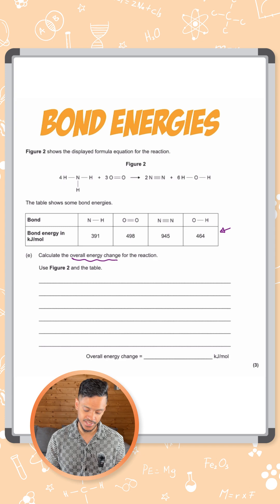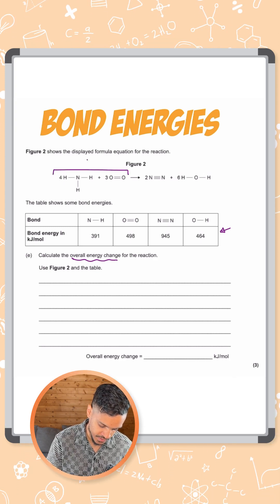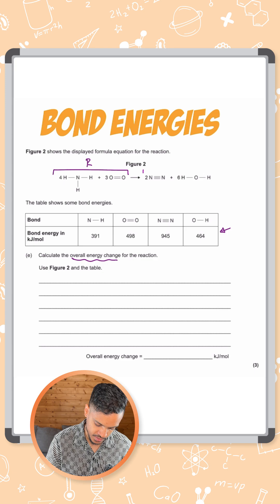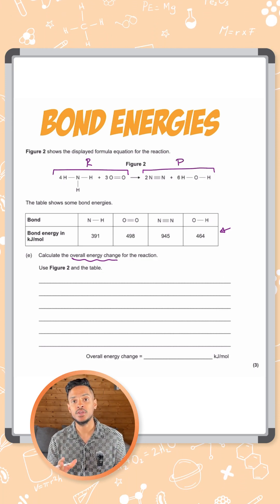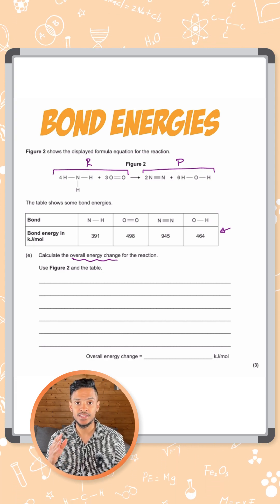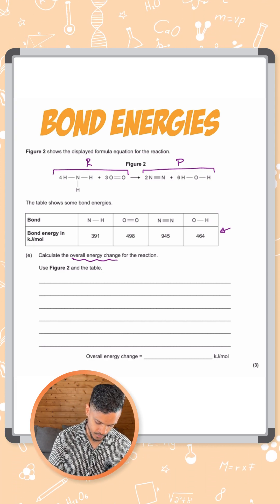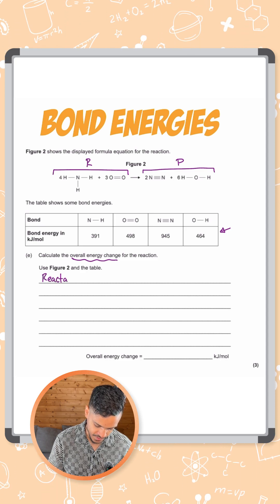Overall energy change is calculated by adding up all the bonds in the reactants and subtracting all the bonds in the products from it. So let's try that out. Remember if you keep your calculation and working out organized, these types of questions can be quite straightforward. So let's start off with the reactants here on the left hand side.